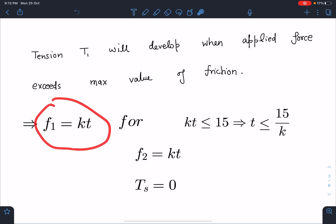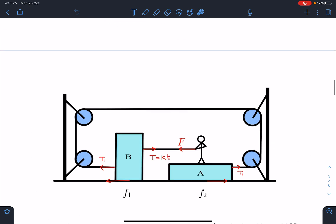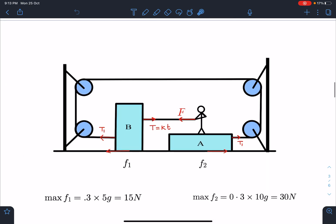So friction F1 is kt when kt is less than or equal to 15, or for time interval where t is less than or equal to 15/k. And at that moment, if you balance these forces here, this tension is not existing. So if you see these two are together and if this is kt, this friction also must be equal to kt and this T1 is not existing 0 to 15/k time.